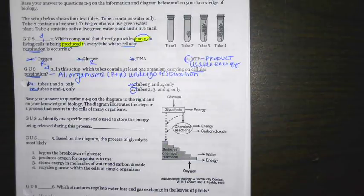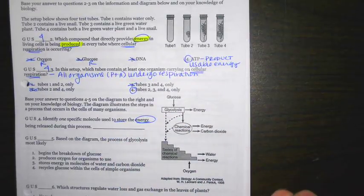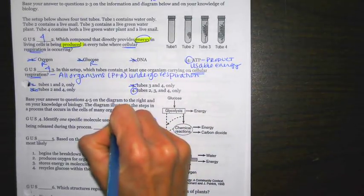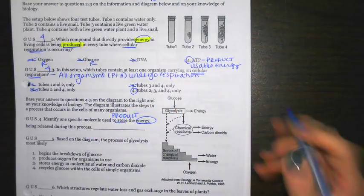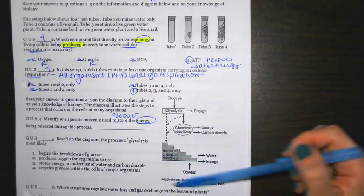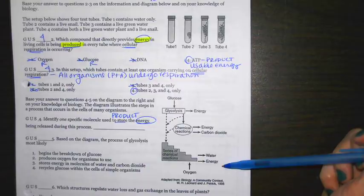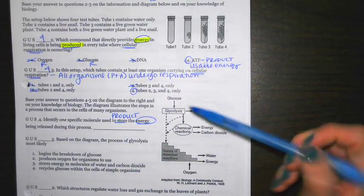Be sure to answer questions four through five on the diagram to the right. The diagram represents steps in a process that occurs in cells of many organisms. Four says identify one specific molecule used to store the energy being released. Because of that, we're looking for something that would be a product. Last year when I saw this on the test, I thought, what are the kids going to think about this? What you really need to do is analyze the diagram before you even get started.